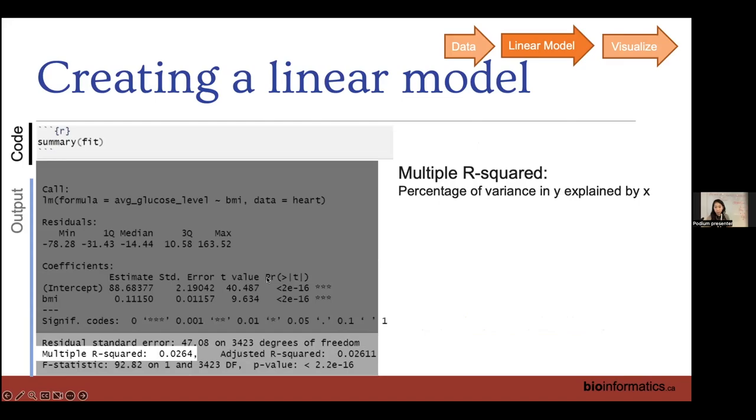And at the bottom, we have our multiple R squared. So this is looking at the percentage of variance in Y explained by X. So here with 0.02, that means that two percent of the variation in our average glucose is explained by BMI. So not a lot. We don't need to be using the adjusted R squared until you get into complex linear models where you need to be correcting for multiple inputs for a single output.